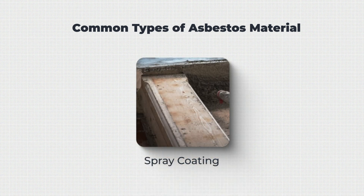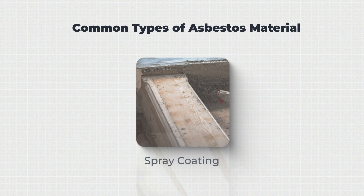Spray coating, sometimes known as limpet asbestos, was a mixture of cement and asbestos fibres sprayed directly onto structural beams and girders. This was to fireproof the interiors of buildings, and also had the effect of soundproofing.